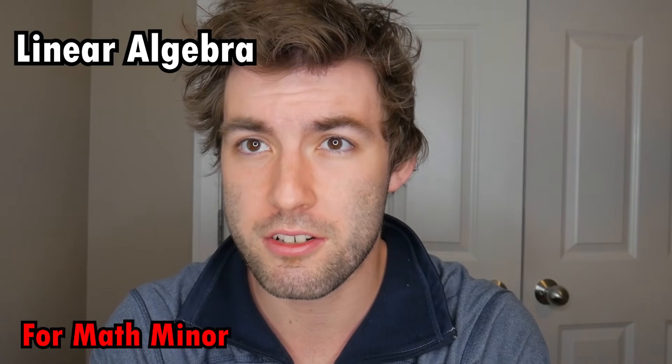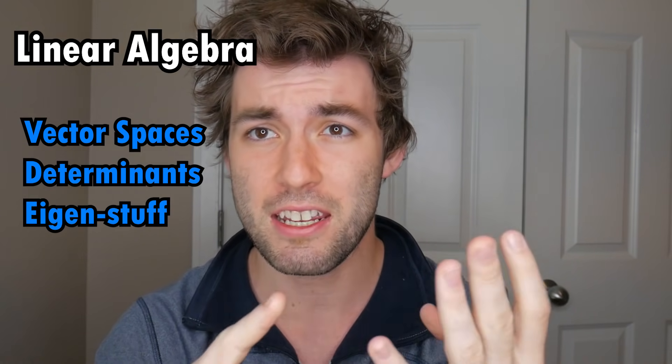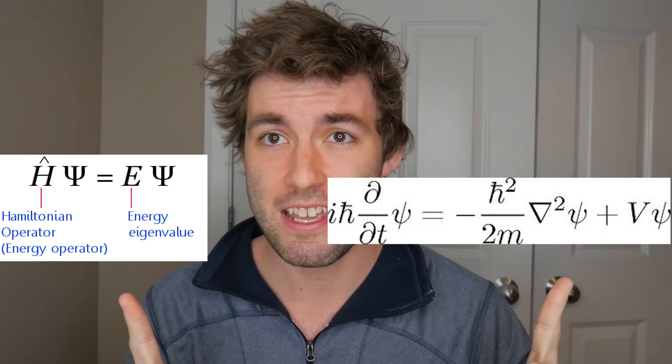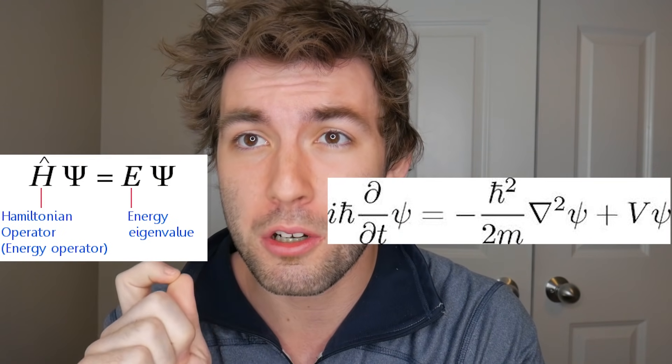Now let's move on to linear algebra — vector spaces, determinants, eigenvalues, eigenvectors, linear transformations. This is the least intuitive class; I think it's by far the most abstract math course for physics majors. However, it is one of the most powerful. It's the reason you can express a second-order differential equation compactly in matrix form. Remember: quantum operators are linear transformations. Linear algebra can be very abstract at first because your only experience is with coordinate spaces, but once you build familiarity with different vector spaces, you'll see how it applies to quantum mechanics.